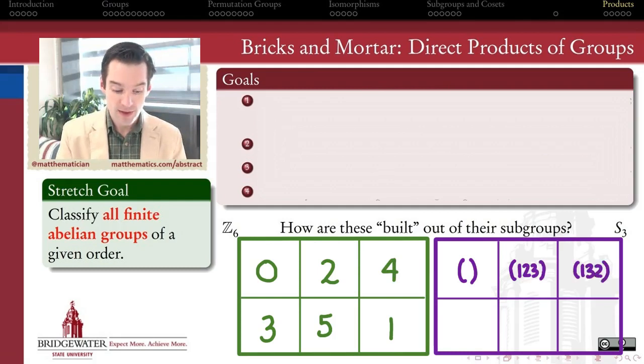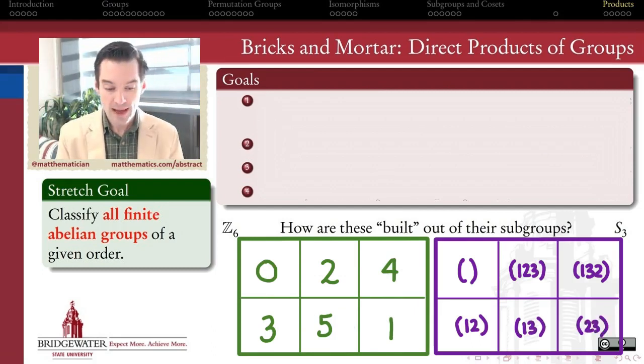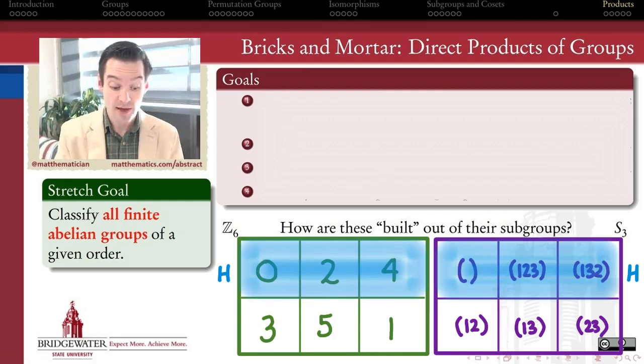For example, in Z6 if I list the six elements like this, in S3 if I list the six elements like that, then I can identify a subgroup of order 3 inside each of these two groups. In here it's the cyclic group generated by 2, so 0, 2, and 4.